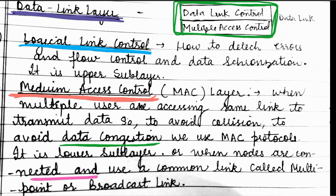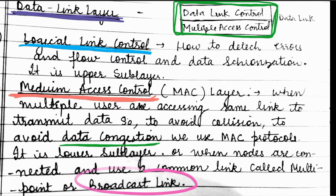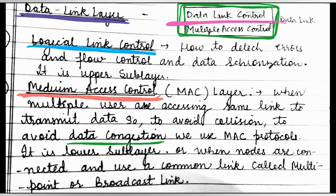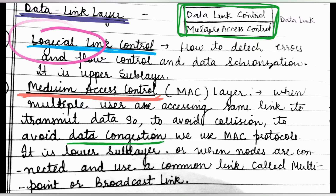When nodes are connected and use a common link, it is called multipoint or broadcasting. When one particular link picks up all the frames that travel, that is known as broadcasting. The data link layer has two layers — this is the whole description. In the data link control layer, I have already uploaded a video covering stop-and-wait protocols, errors, and flow control — please go and watch that video.